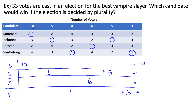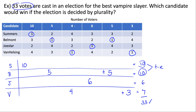Summers gets 10 votes, Belmont gets 10 votes, Joestar gets six votes, and Van Helsing gets seven votes. In this case we have a tie, which can happen sometimes. If we add all the totals up, they add up to 33, which is the correct number of votes. If you're doing a homework problem and you get a tie, it doesn't mean you made a mistake — there's just no individual winner, but there's a tie between two candidates.